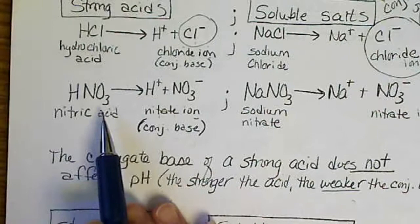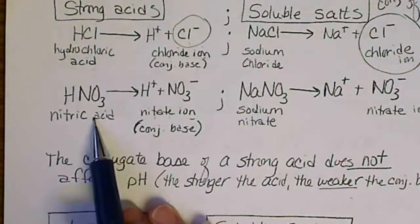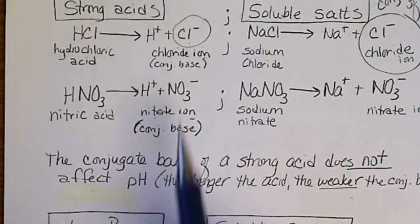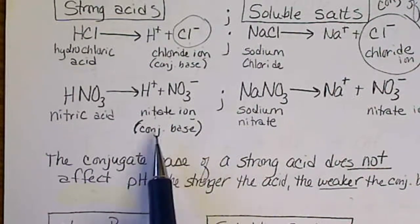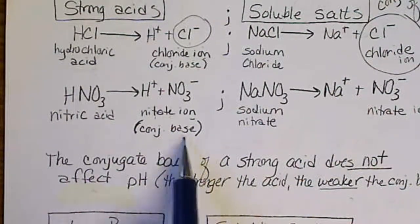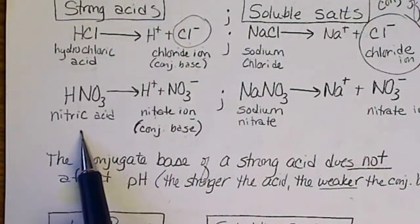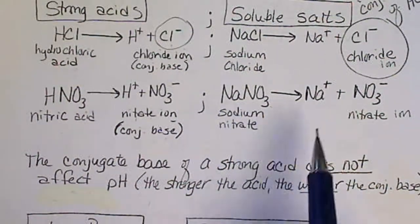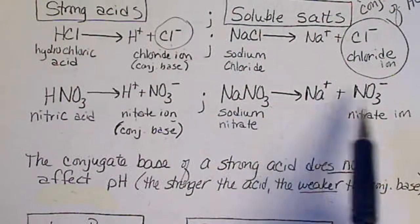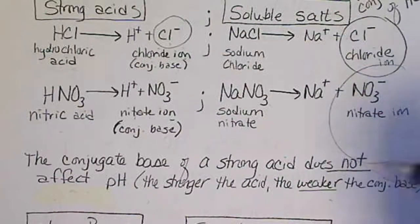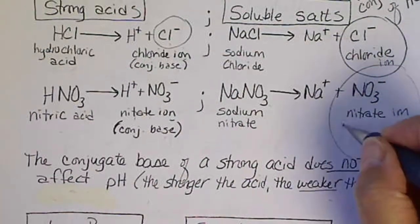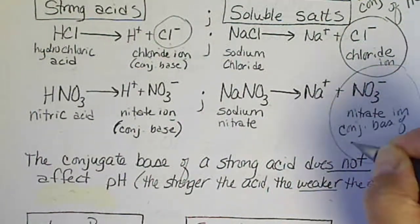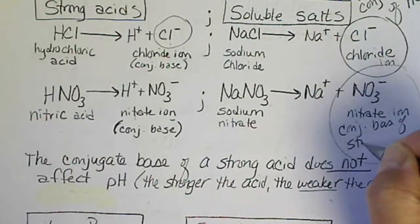Nitric acid is another example of a strong acid. It dissociates into the hydrogen ion and the nitrate ion, so nitrate is the conjugate base of nitric acid. If we have a salt that contains nitrate — for example, sodium nitrate — this is still the conjugate base of a strong acid.